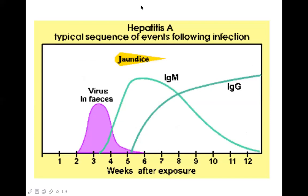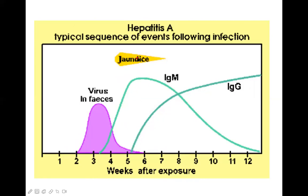Looking at the graph showing weeks after exposure: fecal excretion of the virus peaks early, IgM is high during the acute period and is later replaced by IgG. Jaundice appears and then slowly disappears within about one month.